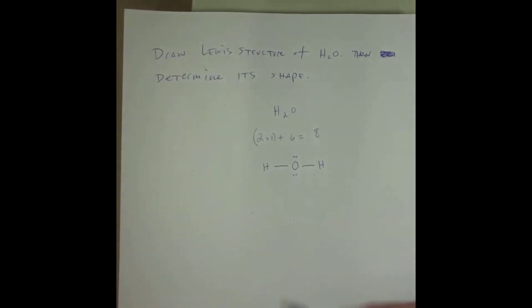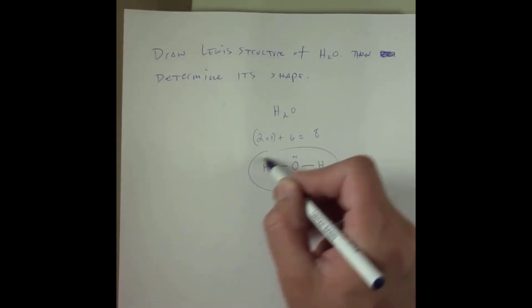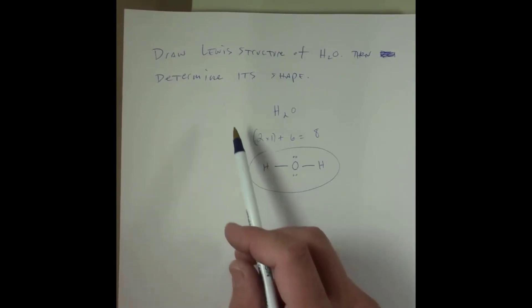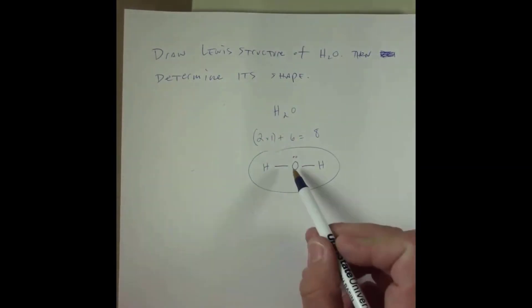Then I ask myself, does everything here have an octet, or in the case of hydrogen, a duet? The answer is yes, so this is the correct Lewis structure for that molecule. The next thing this question asks is for us to determine the shape of this molecule.